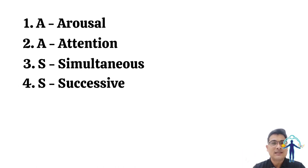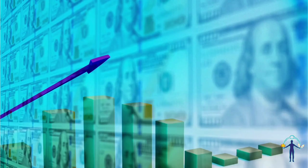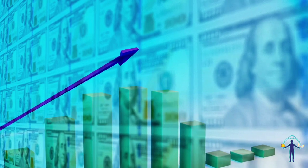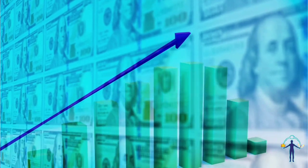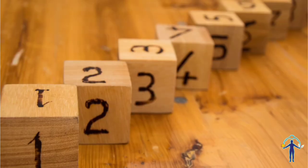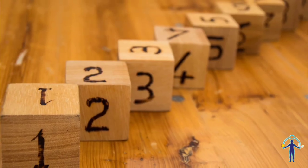Successive processing means that after taking in a lot of information and knowledge, it has to be arranged in proper order — proper sequence. This sequencing and ordering happens in the successive stage, which is associated with the temporal lobe.